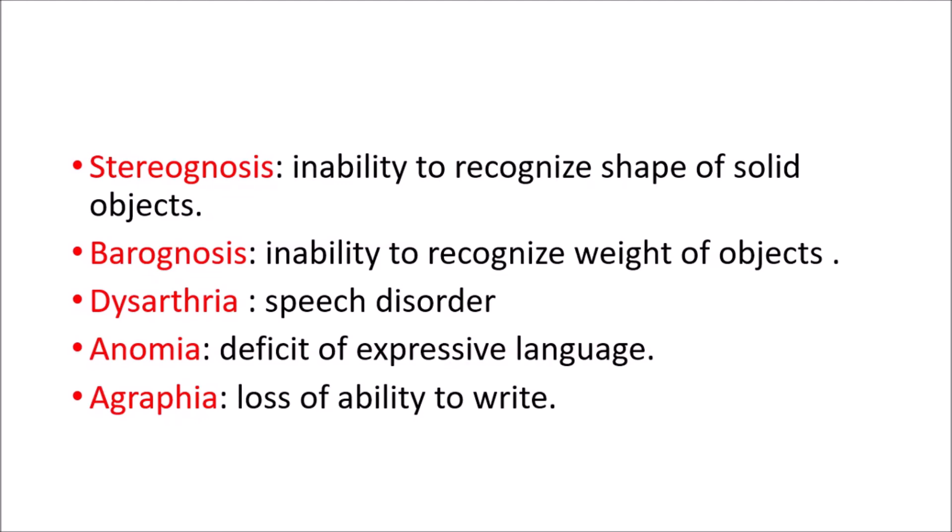Another sign is anomia. Anomia is a type of aphasia in which there is a deficit of expressive language. Individuals with anomia can't express words — they can demonstrate an object with their hands but they cannot express the word for it.